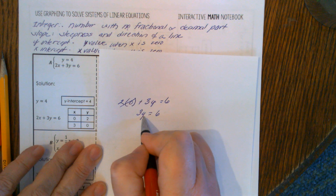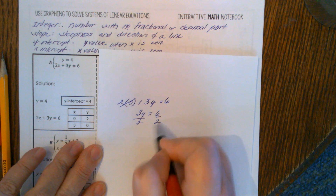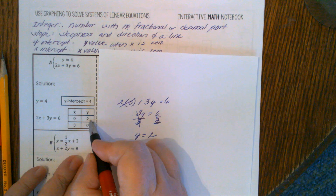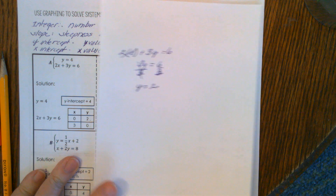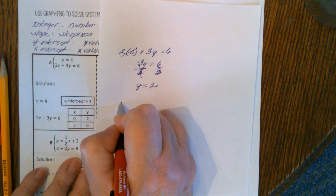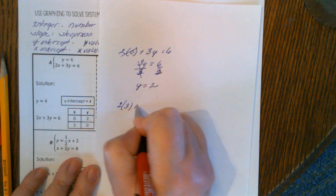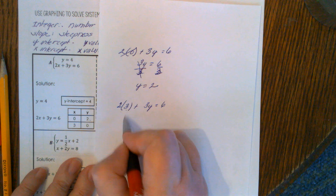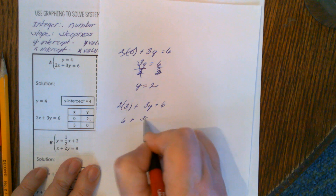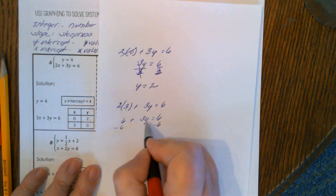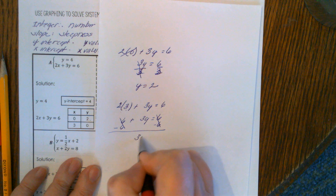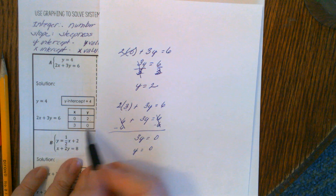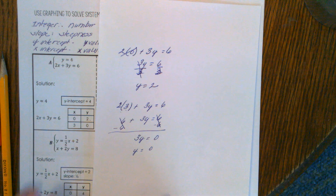Since 2 times 0 is 0, we get 3y=6. The inverse of multiplication is division, so we divide both sides by 3. These cancel out and y=2. For the second point, we set x=3: 2 times 3 plus 3y equals 6, so 6 plus 3y equals 6. Subtracting 6, we get 3y=0, so y=0.